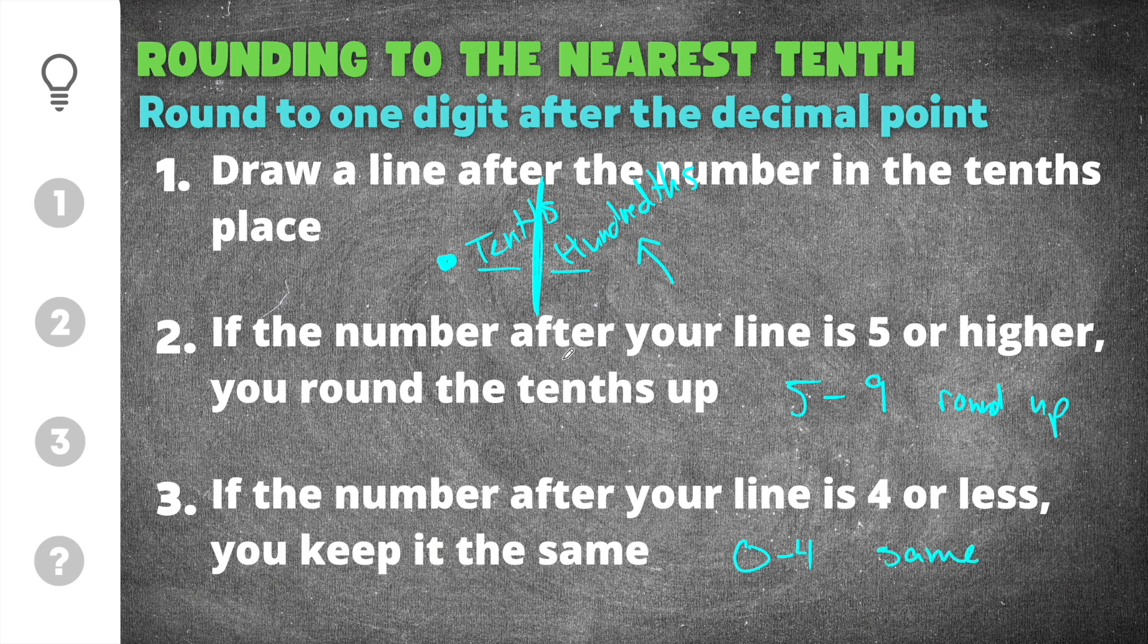In this case when we're rounding, we're rounding to the tenths position, which means we're trying to make a number that is as close to that tenths value as possible. If the number in the hundredths place value is five to nine, that means we have to round this ten up. And if it's from zero to four, that means it's kind of low and we keep the tenths the same.